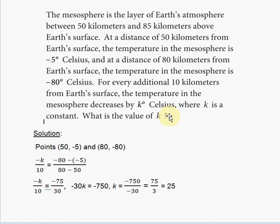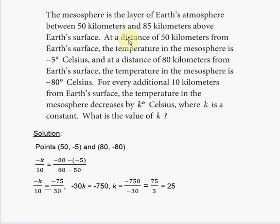The first thing I notice is that there are points and slope involved. There's a function of one variable in terms of the other. The dependent variable is the temperature, because the temperature depends on the distance above Earth's surface. So the distance is your X and the temperature is the Y.